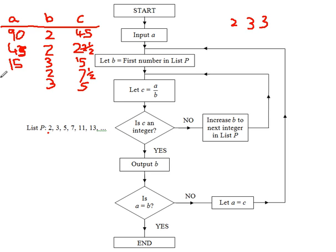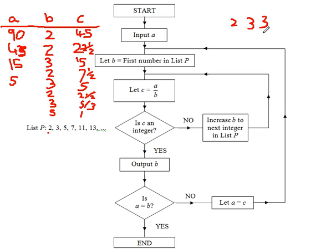Is A equal to B? The answer is no. Let A equal C. Let B equal the first number in list P. Let C equal A divided by B — 5 divided by 2 is 2 and a half. Is C an integer? No. Increase B. Let C equal A divided by B — 5 divided by 3. Is C an integer? No. Increase B to the next number in the list. Let C equal A divided by B. Is C an integer? Yes. Output B.